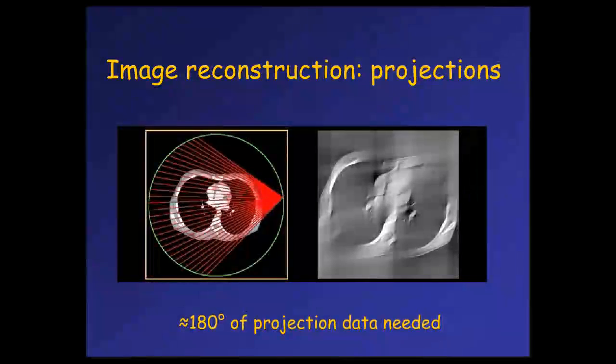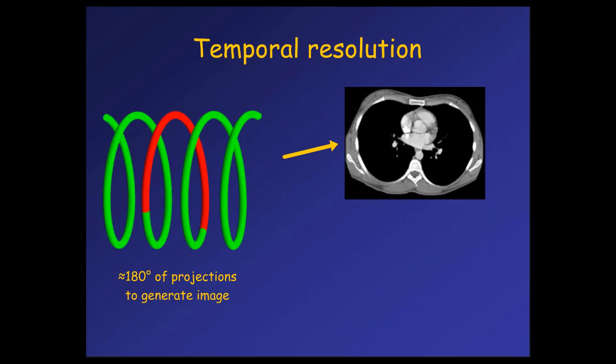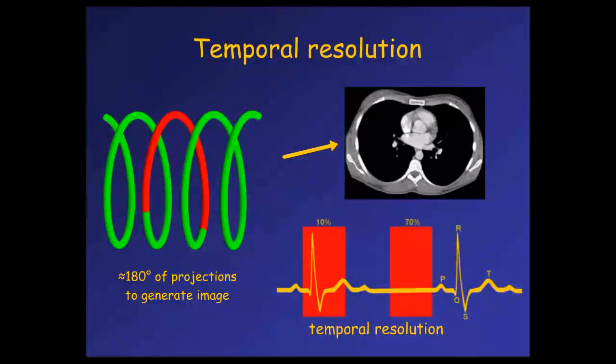That means the data used to generate an image, say at 70% of the R interval, will span from 60% of the R interval to 80% of the R interval. This is not an instant snapshot. If you generate an image in diastole, the heart during that period doesn't move much. Even if the temporal resolution is not that great, you will generate great images because the heart doesn't move much. Whereas if you try to generate images in systole, around 10% of the R interval, during that small period of time the heart will have moved quite a bit. And so the images will be more blurry.